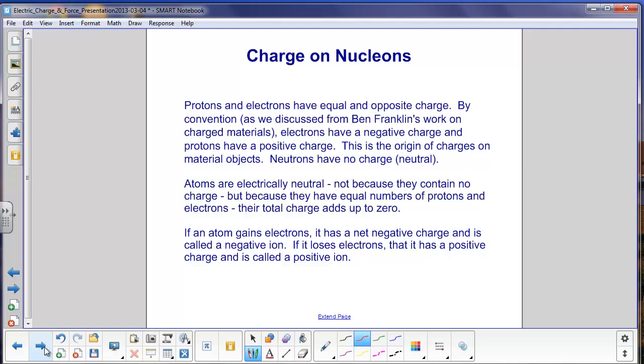Extending Ben Franklin's charge convention down to the level of the atom, we find that protons and electrons have equal in magnitude and opposite charges. The proton is positive and the electron is negative. This is the origin of the charge that shows up on the macroscopic level. That is, what we can see with our own eyes, like the ruler picking up the bits of paper.